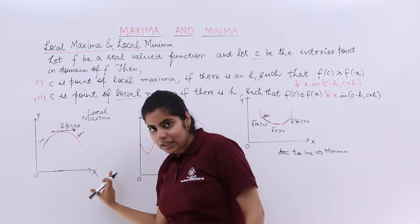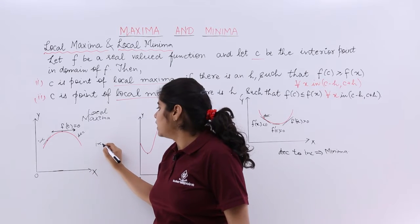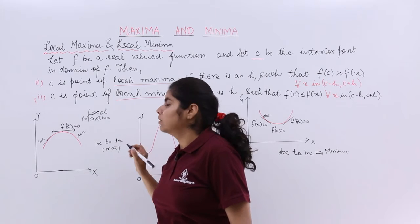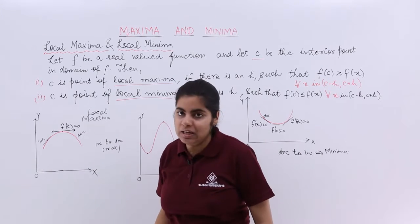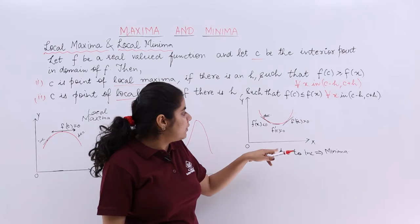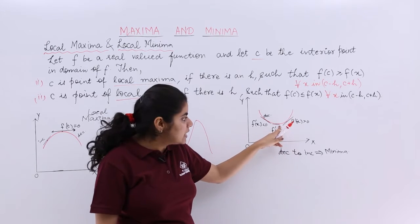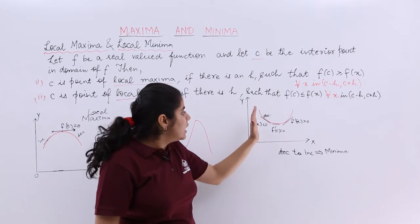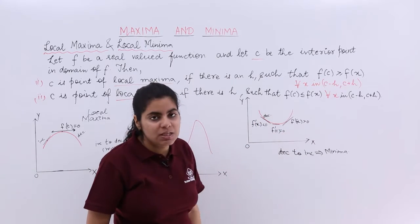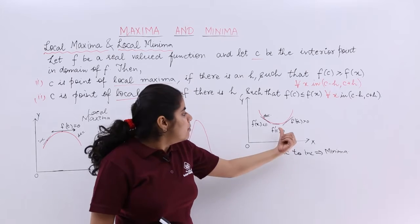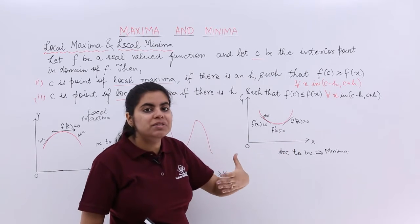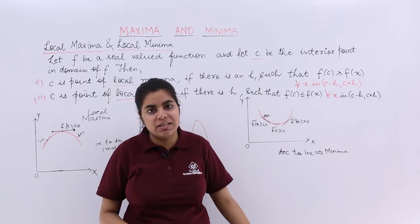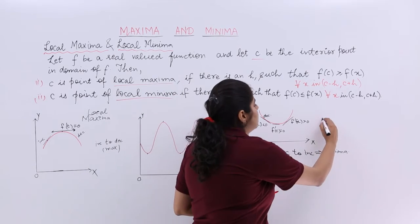And increase to decrease, increase to decrease gives me maxima. This thing we have done. Now in this graph again if I look, if this is the point c, then I say that my c is giving me local minima. Because in this domain c-h to c+h, I find that my c would be there wherein f of c is less than equal to f of x for all c-h to c plus h. So this is local minima example.